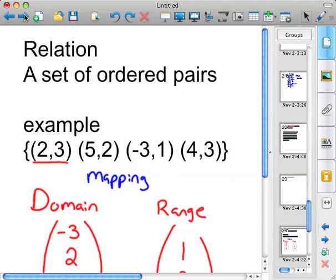So first off, a relation is a set of ordered pairs. So for example, if you have an input of two, I have it underlined here, you get an output of three.